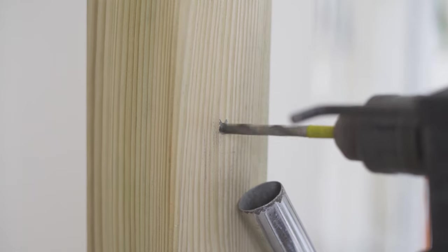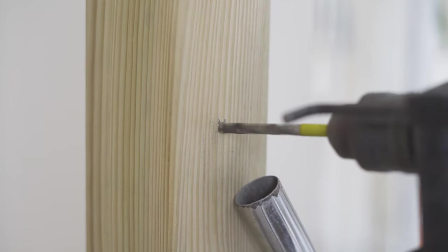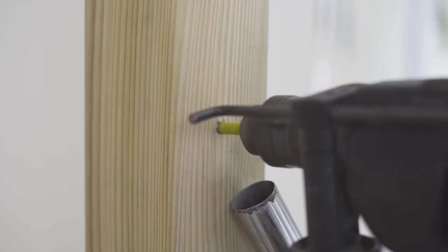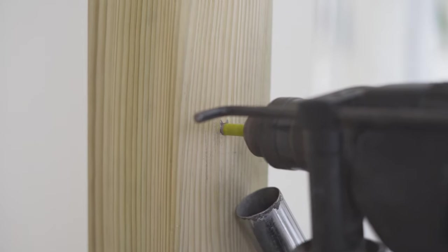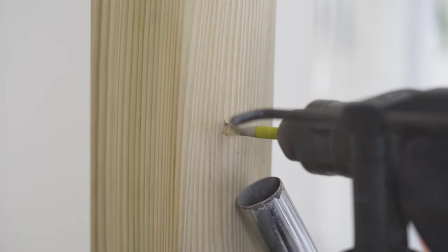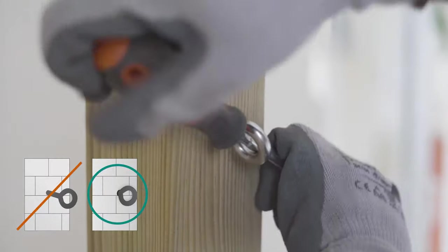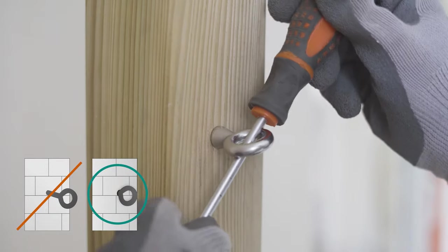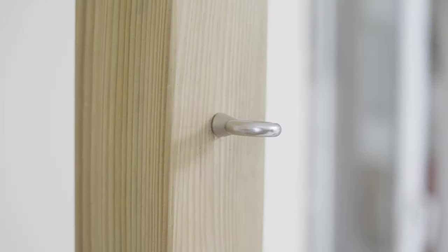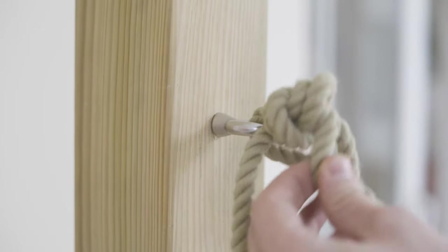Next, we'll drill the hole until we reach the depth indicated by the tape. To minimize dust and mess, use a vacuum cleaner next to the drill while drilling. Then, we use a sturdy screwdriver to screw the bolt all the way in until you reach the shaft. Now, we can proceed with attaching the ropes to the bolts.